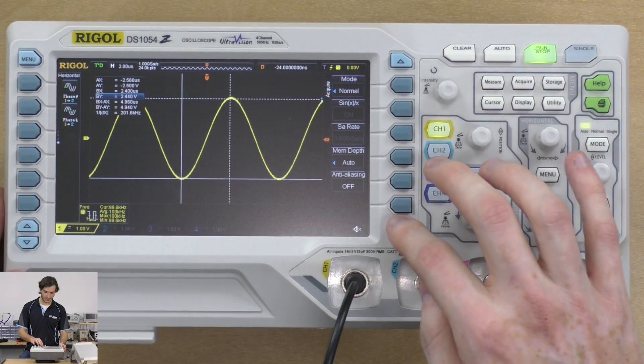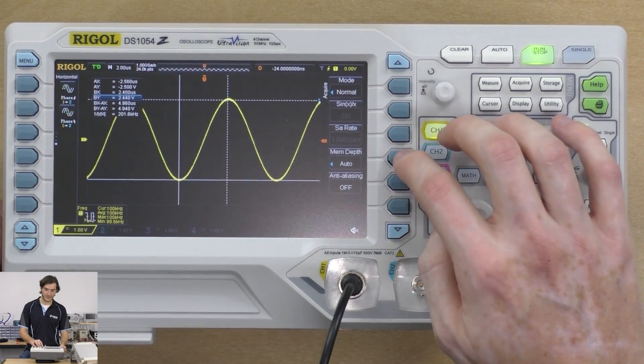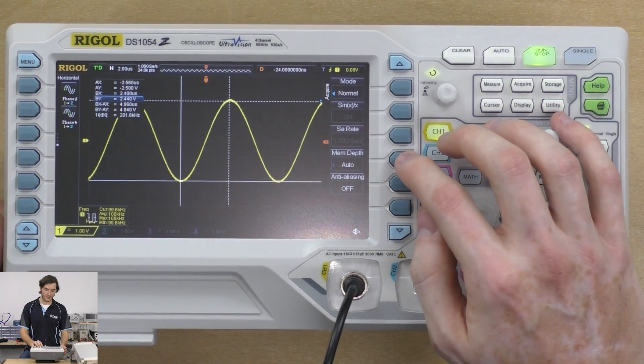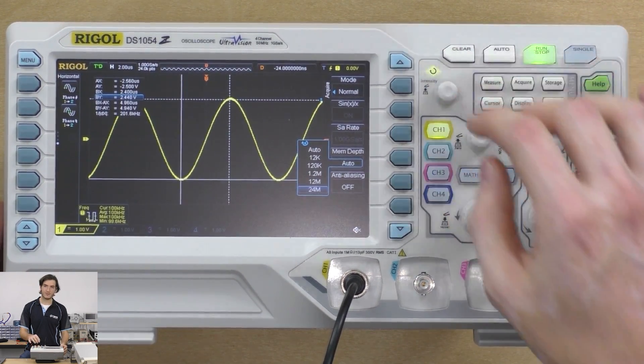Here we have important settings like anti-aliasing and we can manually set the memory depth. You might want to do this because it changes the window time for a given signal.